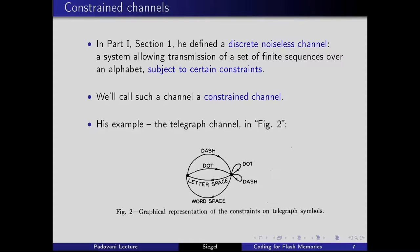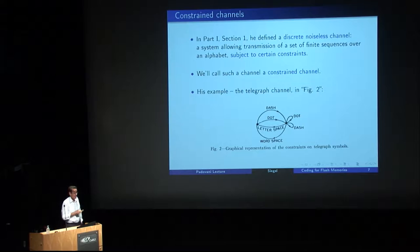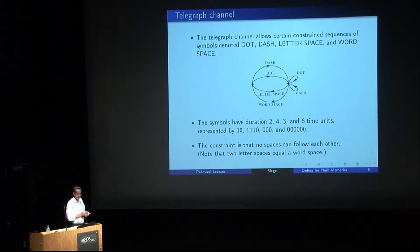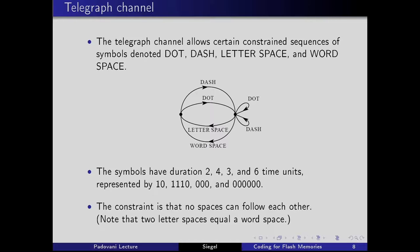Figure two! In part one, section one, Shannon defined a discrete noiseless channel as a system that allows transmission of a set of finite sequences over an alphabet subject to certain constraints. We'll call such a channel a constrained channel. The example he gave was the telegraph channel — that is actually figure two — a reproduction of that less well-known figure.